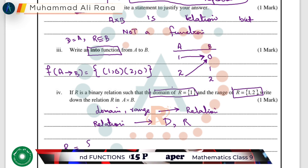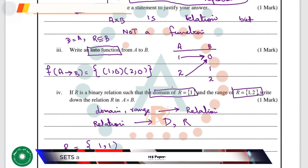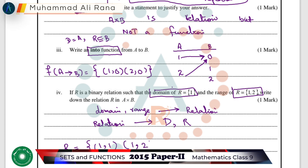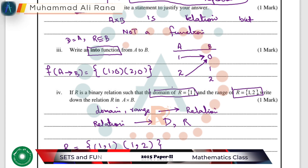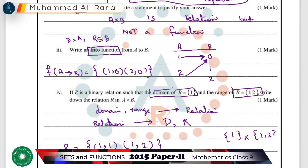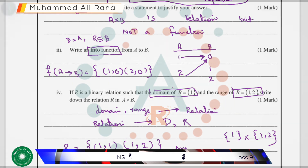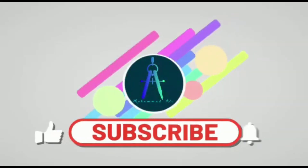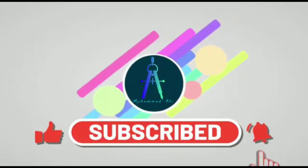The method is the same. Since the domain is {1} and the range is {1, 2}, the relation R will be {(1,1), (1,2)}. This is a relation from Set A to Set B such that the domain equals {1} and the range equals {1, 2}. We simply form the Cartesian product of the domain and range sets to get our answer. Thanks for watching — don't forget to like, comment, share, and subscribe.